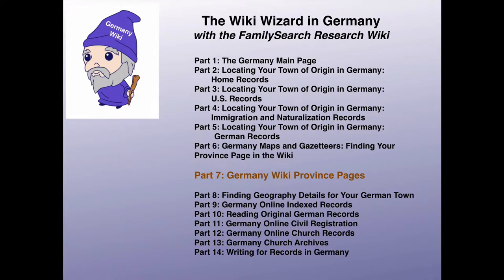This is the seventh lesson in a series intended to teach you how to use the features of the FamilySearch Research Wiki to help locate genealogical records about your ancestors who lived in Germany. In this lesson, you will learn how to use a Germany province page.